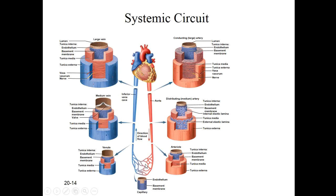Every cubic millimeter of your body has capillary beds in it, with a few rare exceptions — cartilage, for example, is avascular. But all of your skin, muscle, fat, nervous tissue, glands, liver, stomach, and uterus are packed with these microscopic capillary beds. This is really where the action happens: nutrients and oxygen are delivered through the leaky capillary wall to tissues, and carbon dioxide and wastes are brought into the blood and carried back to the heart through venous return.